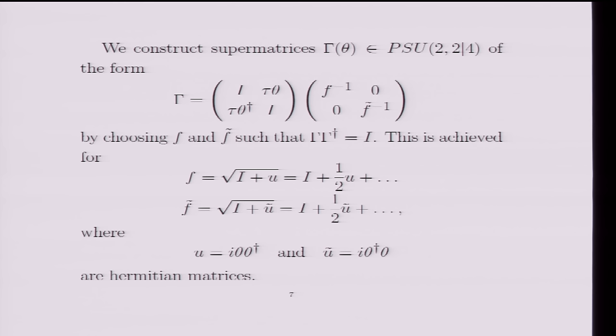And then we have something with just diagonal blocks over here. And we require that this is an element of this group, which means I need that gamma gamma dagger is equal to the unit matrix. And it turns out that you can solve this for appropriate choices of the things I called F and F tilde. And so this is a 4 by 4 matrix that has to do with the SU(4), and this is a 4 by 4 matrix that has to do with the SU(2,2).